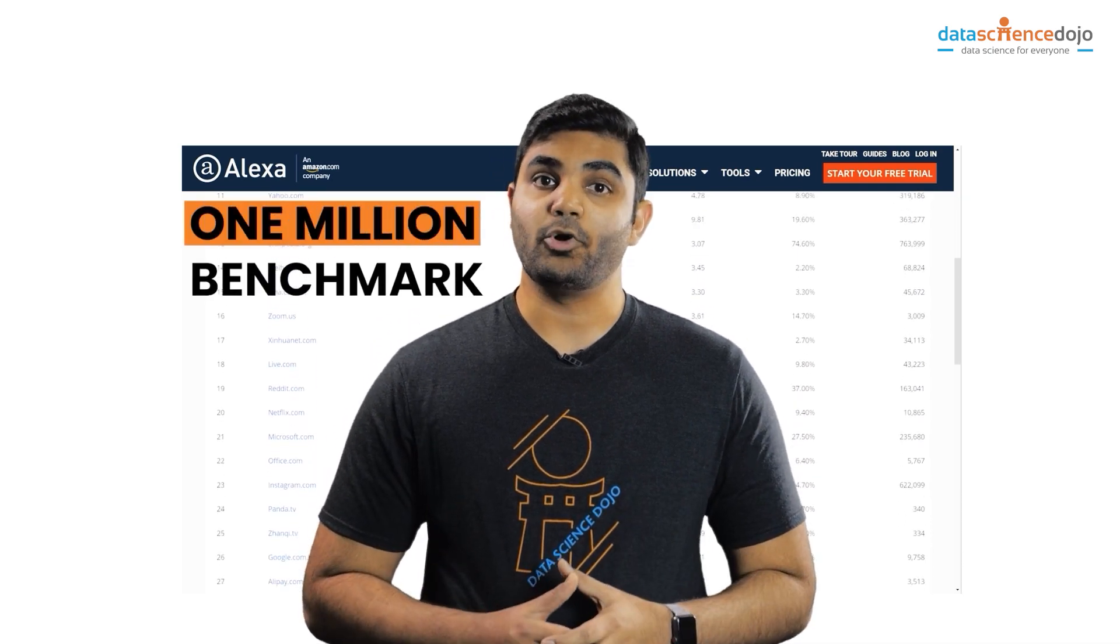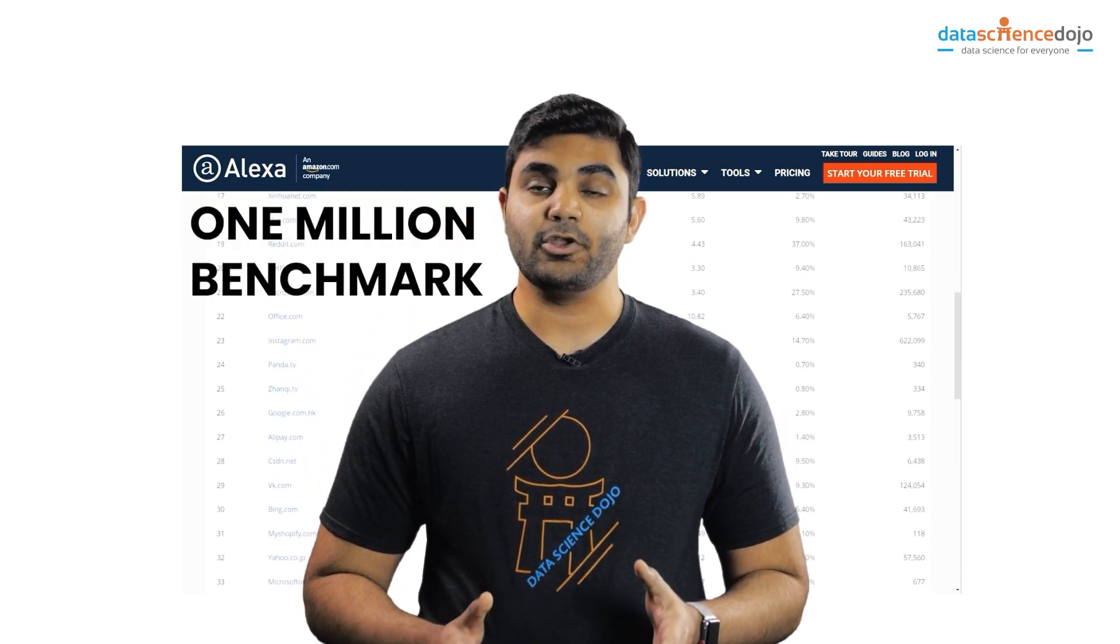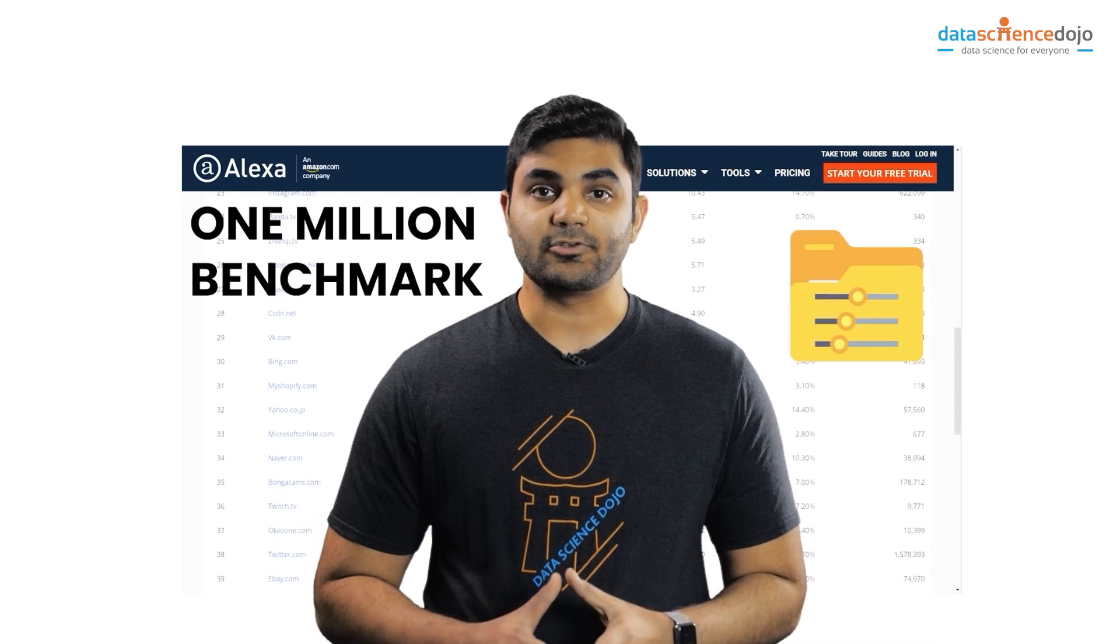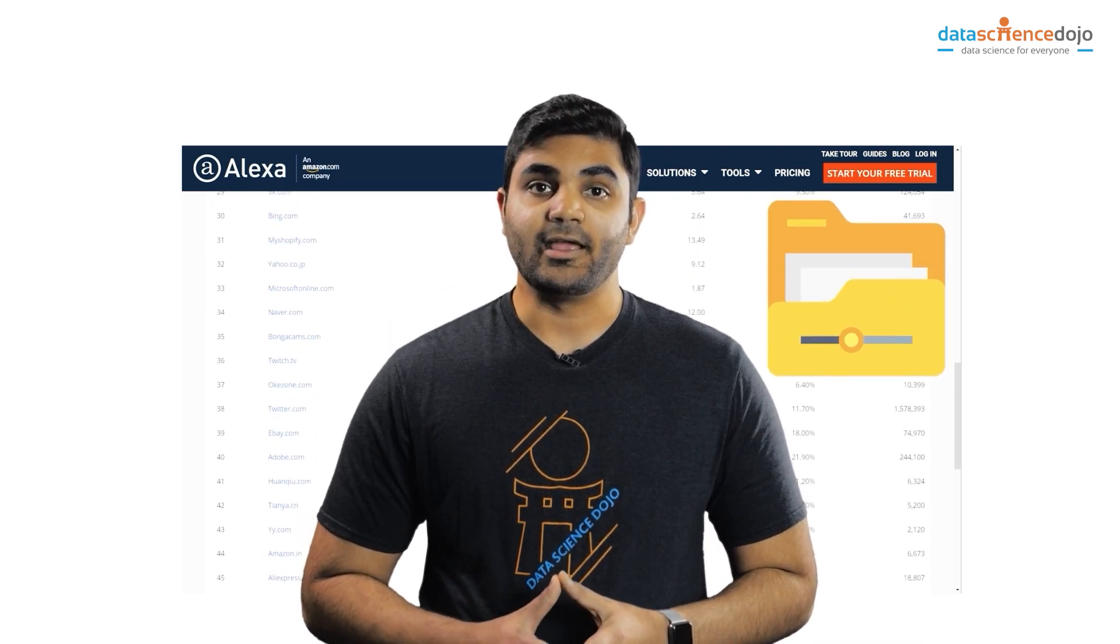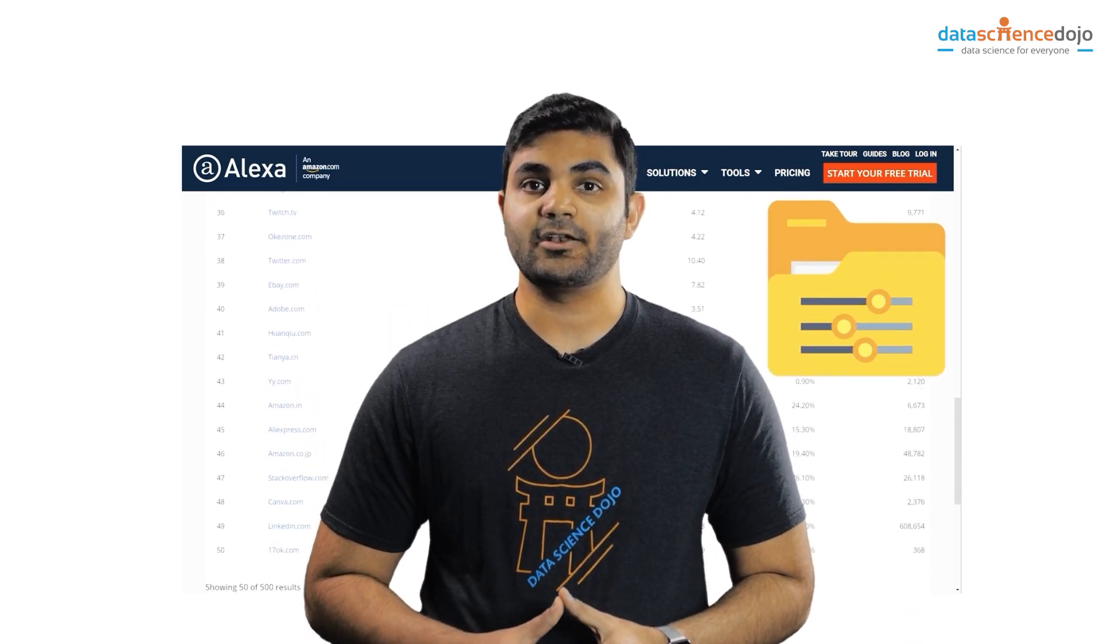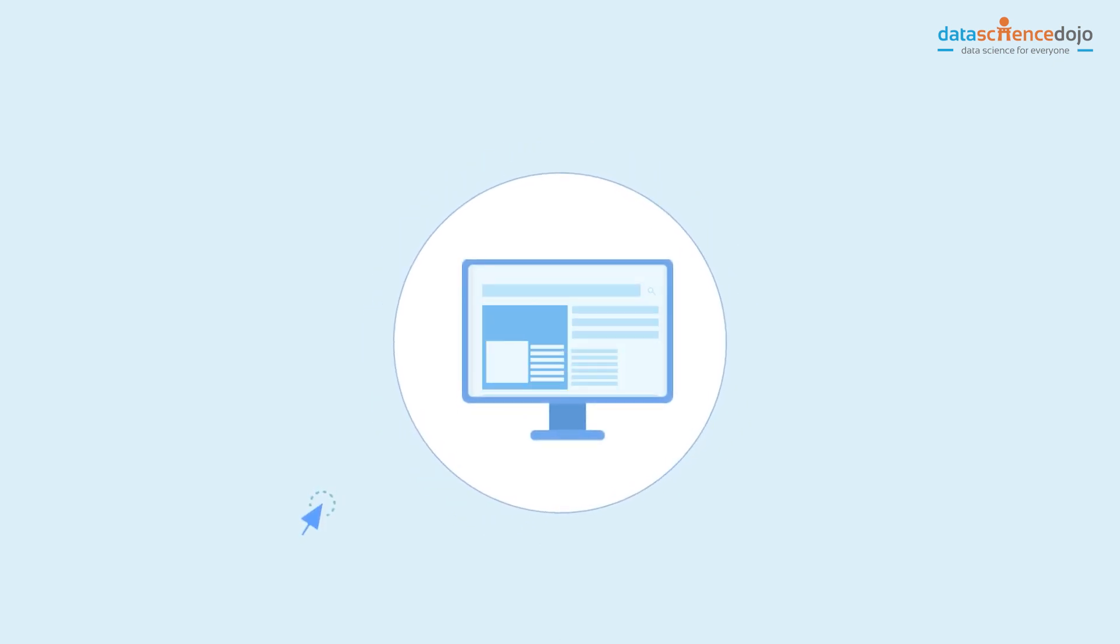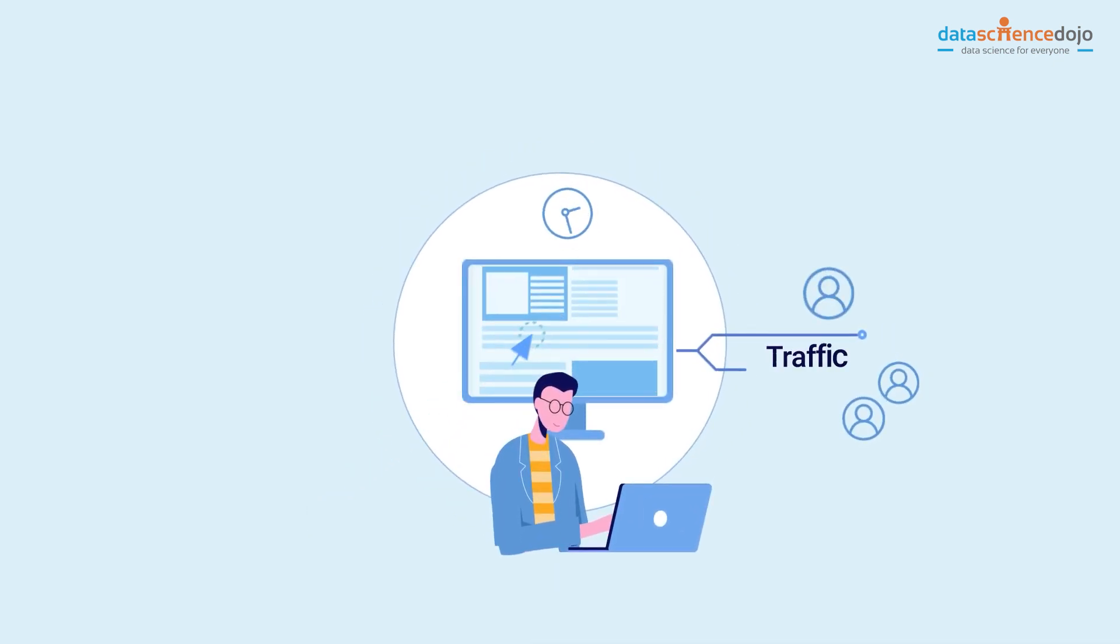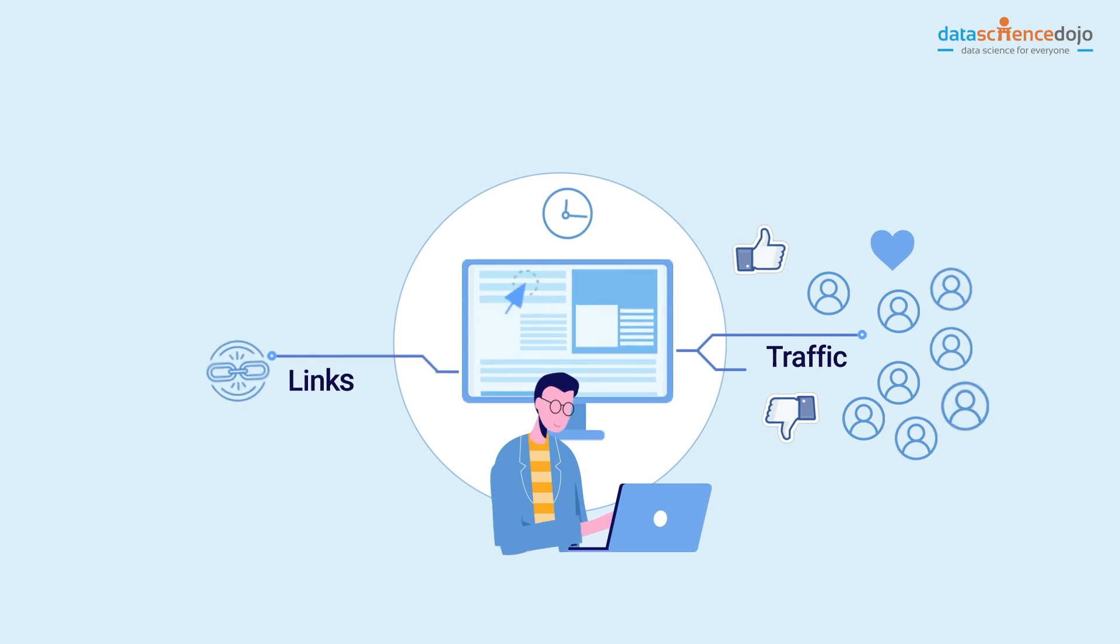And the 1 million benchmark is important because Amazon, the parent company of Alexa rank, creates a database of top 1 million websites and starts indexing them as a result of which these top websites experience more traffic, more embedded links, and greater number of views.